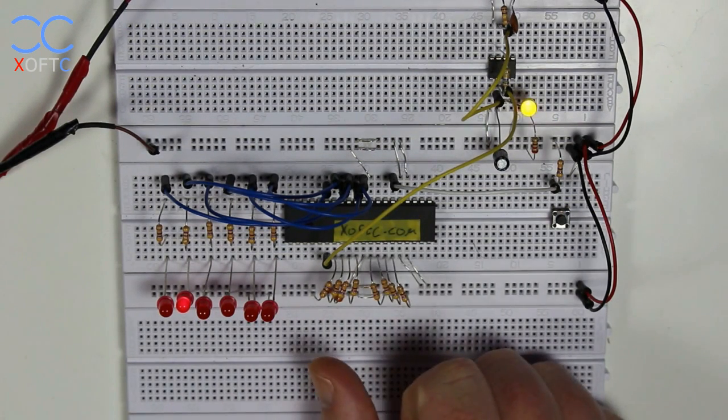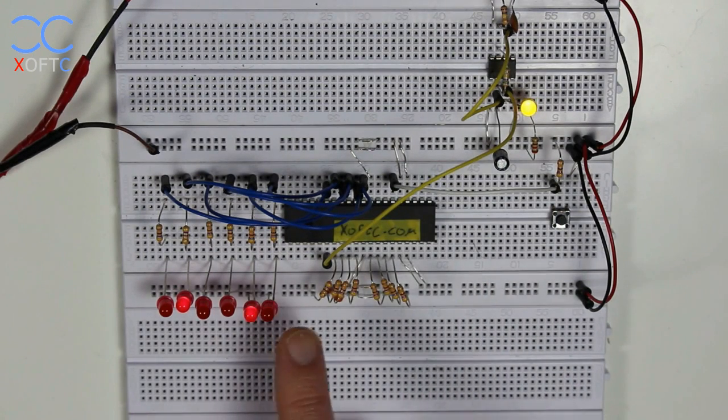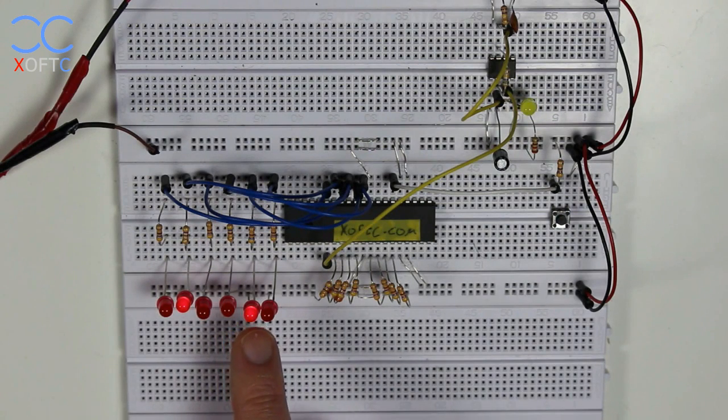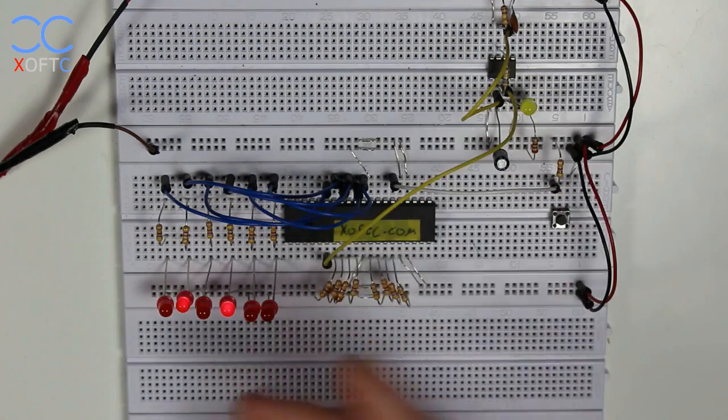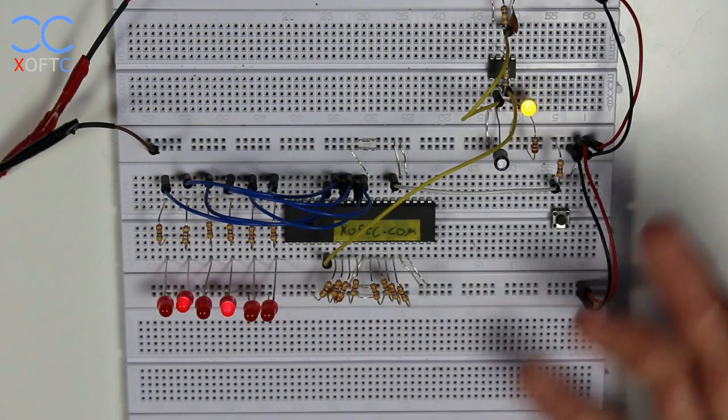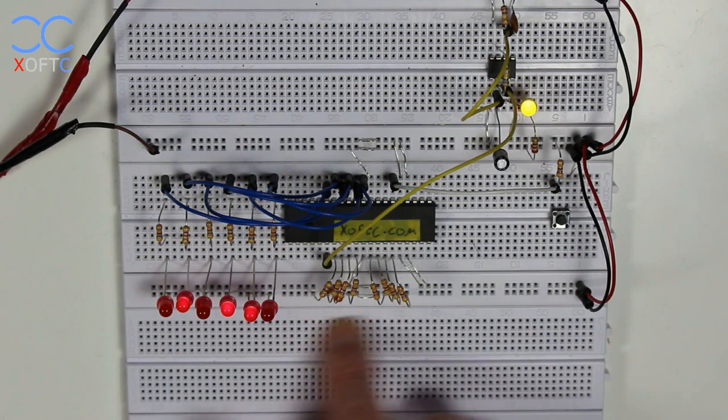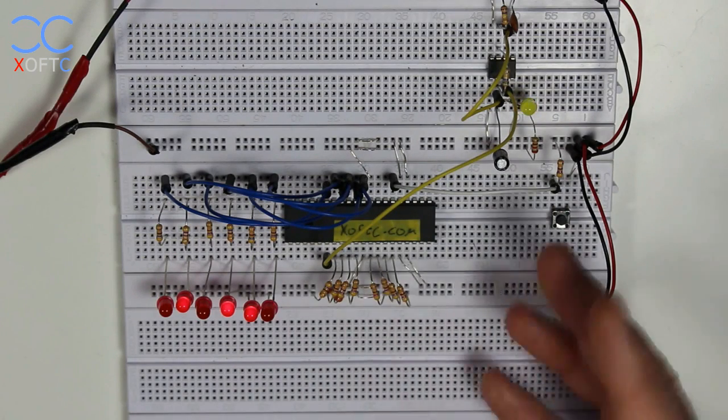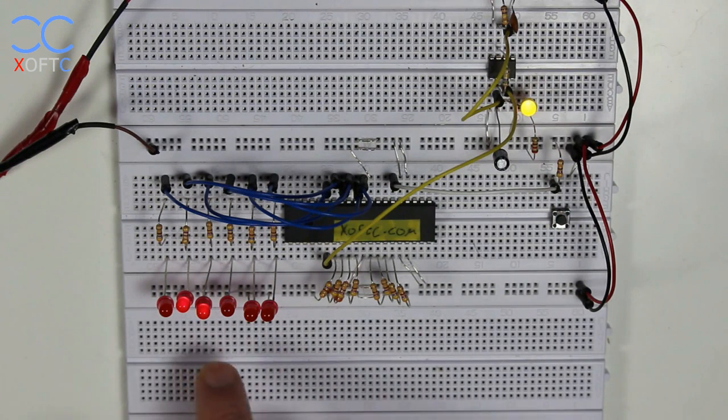And that is a no operation command. What it basically does is it keeps counting up in the address bus so that it goes to the next address in the memory and hopefully receive a new command. But since it's hardwired, it just continues to cycle through no operation and counting on the address bus until it reaches the end of the count and it will reset.